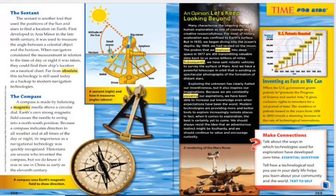The sextant is another instrument — shown here in the picture. It used the positions of the sun and stars to find a location on earth. First developed in Asia Minor in the late 10th century, it was used to measure the angle between a celestial object and the horizon. When navigators considered the measurement in relation to the time of day or night it was taken, they could find their ship's location on a nautical chart. Far from obsolete, this technology is still used today as a backup to modern navigation technology.